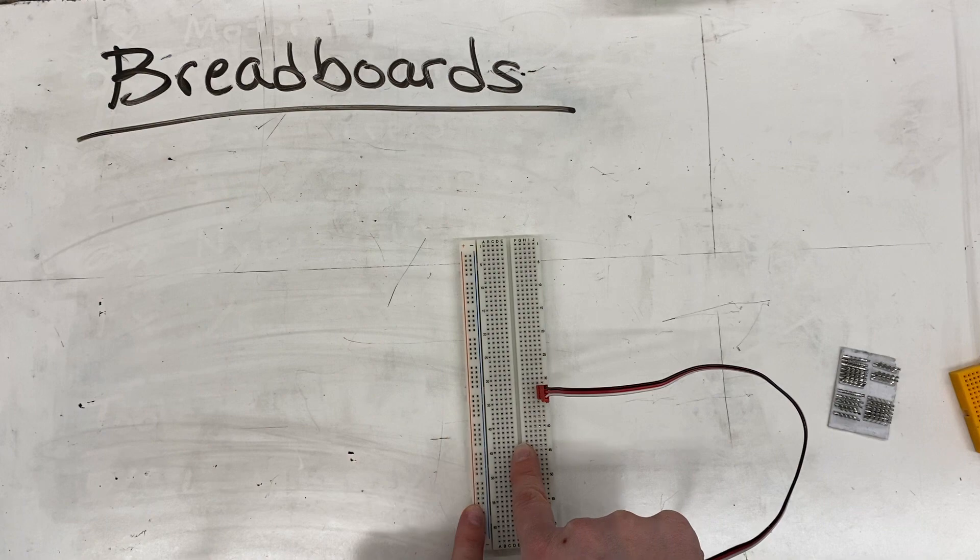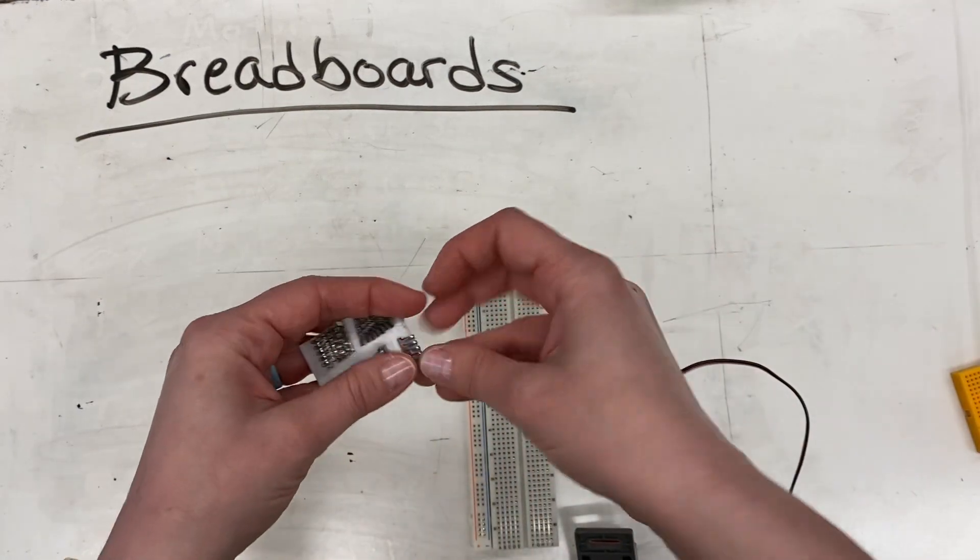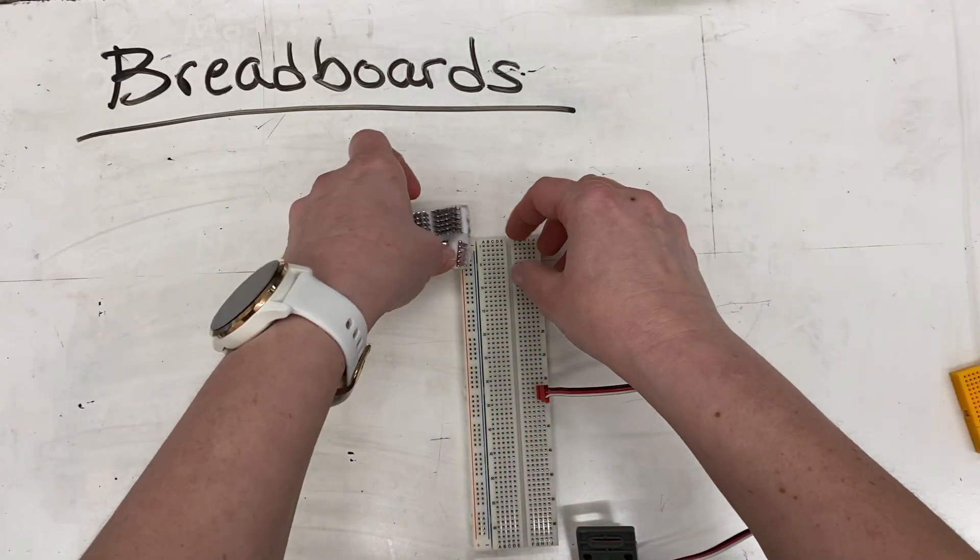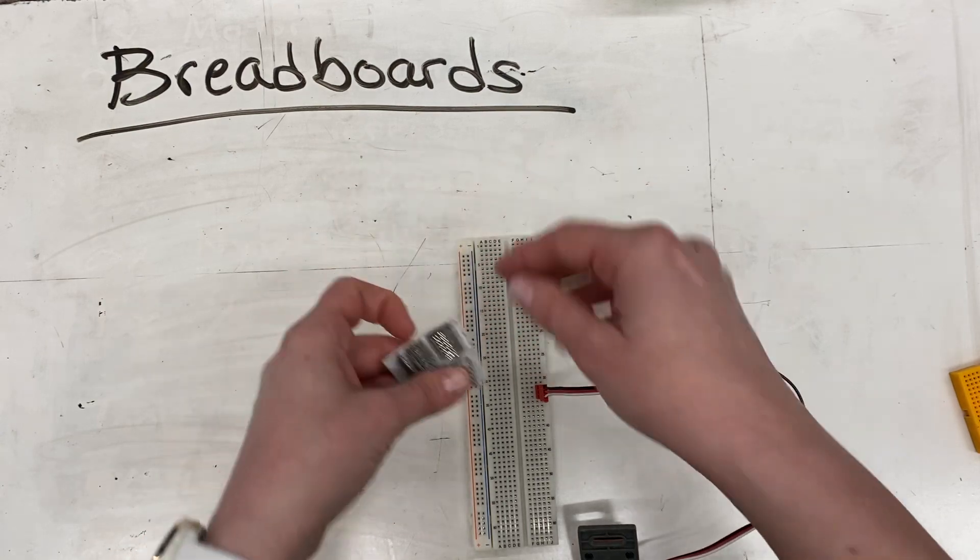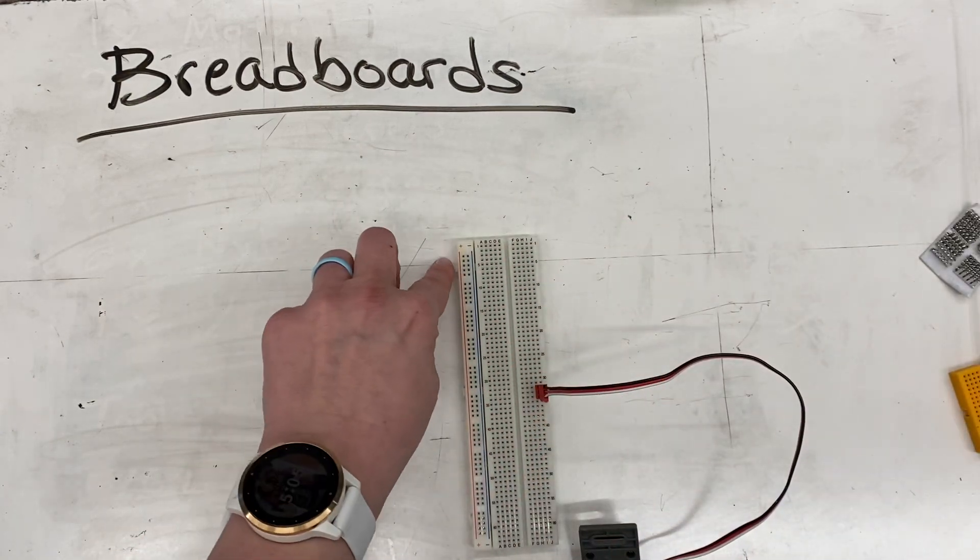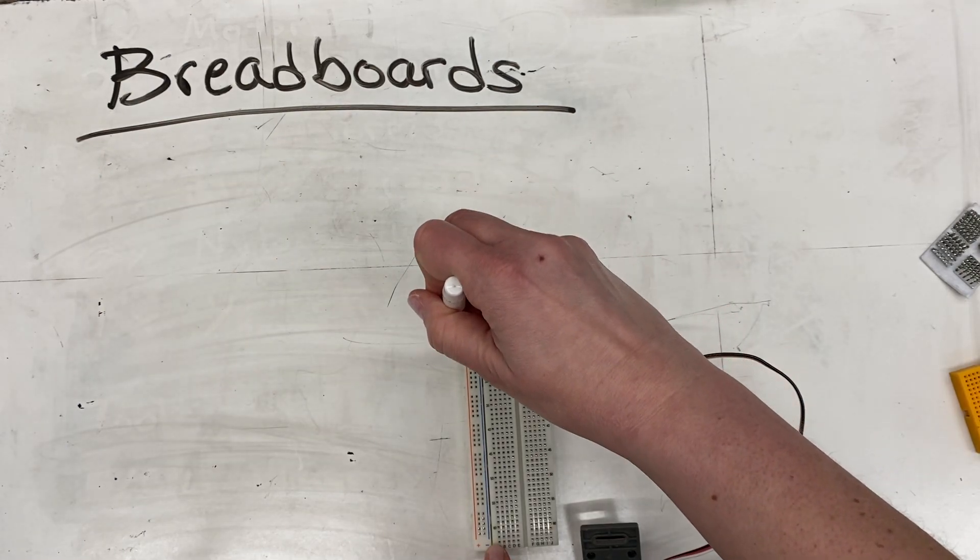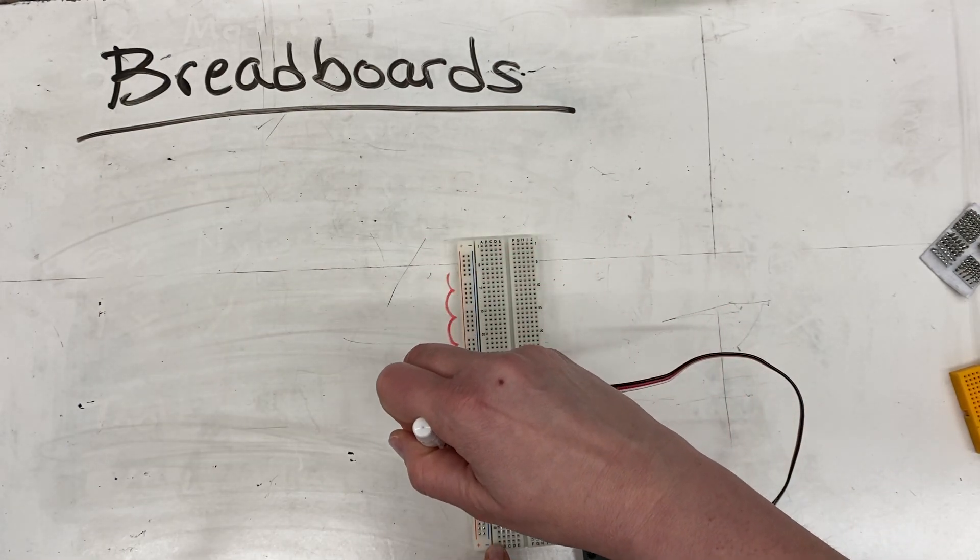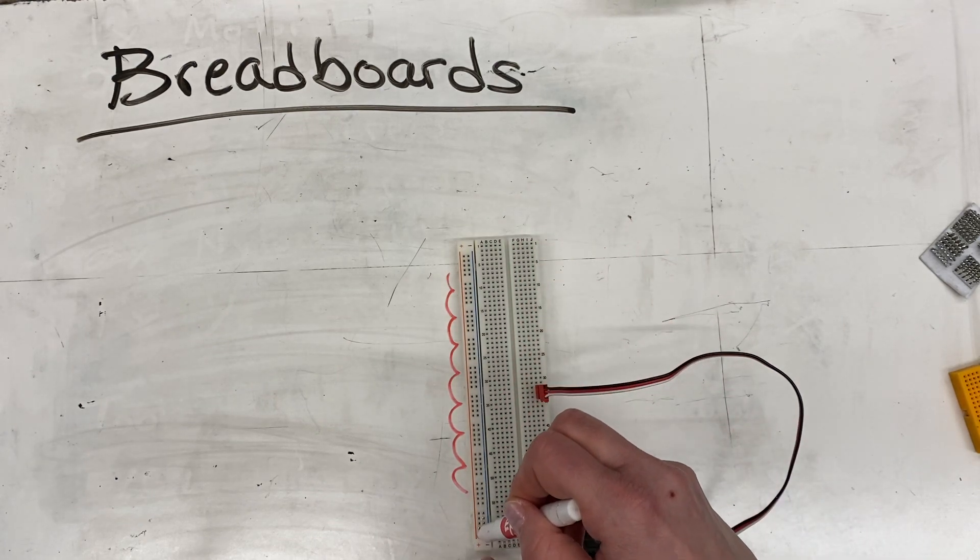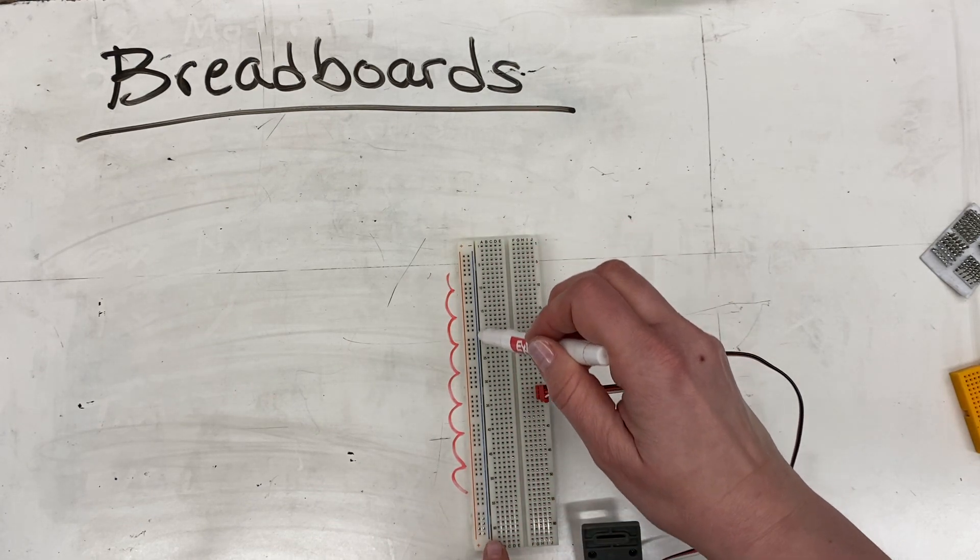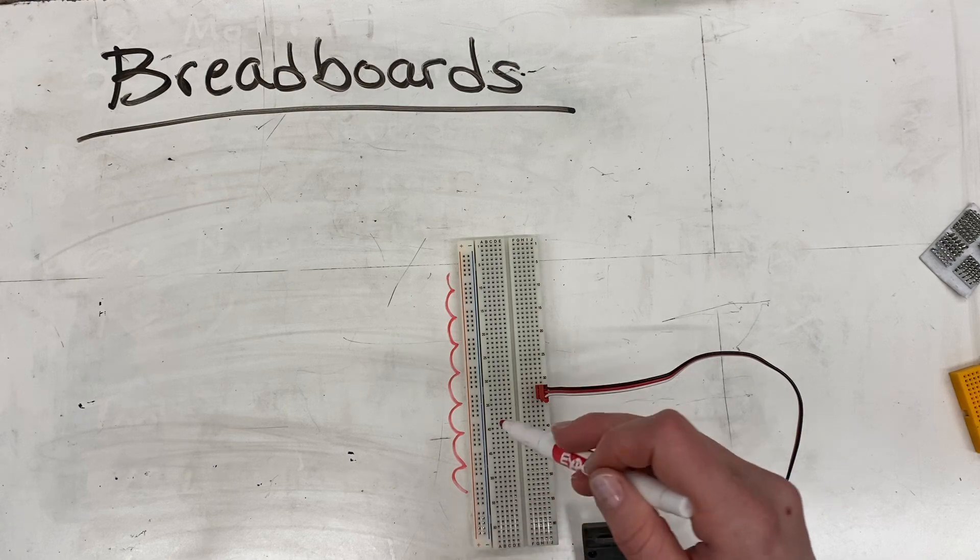Now, over here on this side, it's basically groups like this all the way down, but they are also all connected. Each of the five groups are also connected, so everything in that whole red column is connected, and everything in that blue column is connected.